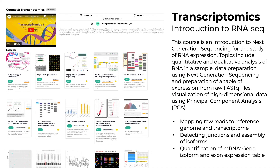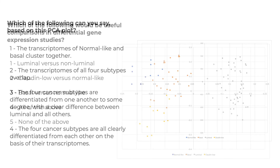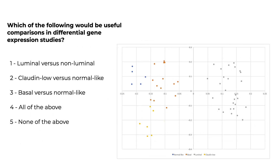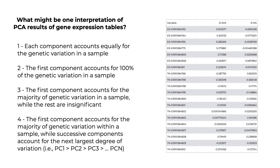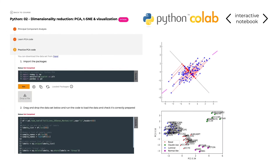To further explore these methods and practice how to use them, load all of the courses on the LearnPortal. Lesson 7 in the transcriptomics course will introduce you to PCA and provide additional details, including quiz questions such as: which of the following is based on this PCA plot, which comparisons would be useful in differential gene expression studies, and what might be one interpretation of PCA results of gene expression tables. Lessons also offer coding exercises for PCA in R using ggplot2, where you can practice using several different datasets to explore global patterns. Similar code can also be implemented in Python with a notebook where you can keep all of the code and solve a challenge.